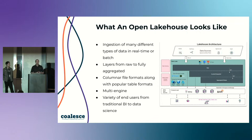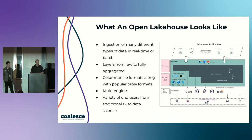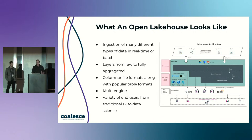So what does an open lakehouse look like? At Starburst, we like to talk about the open lakehouse that is completely open — meaning your data sits in your storage account, with ingestion of many different kinds of data in real time and batch. You have your traditional layers — landing, curated, bronze, silver, gold, whatever you want to call it. We've been calling these different layers for 20-something years. The key to data lakes as far as performance is the columnar formats: Parquet, ORC, and Avro. Then really having a multi-engine approach — Spark and Trino, but obviously there are a lot more engines out there. It's from BI to data science — all in one place.